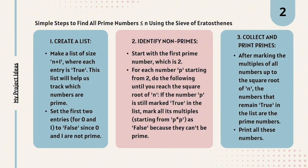Here we are. What are the simple steps to find the prime numbers that is less than equal to n using the Sieve of Eratosthenes? First is create a list. Make a list of size n plus 1 where each entry is true. Suppose n is 30, the list size should be 31 and each element in the list should be true. This list will track which numbers are prime. The first two entries for 0 and 1 should be false because 0 and 1 are not prime.